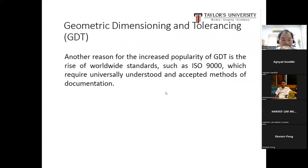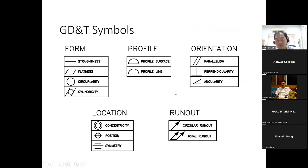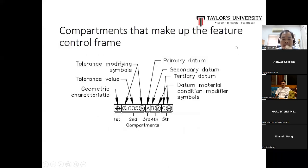Another reason for the increased probability of GD&T is the rise of a worldwide standard such as ISO 9000, which requires universally understood and accepted methods of documentation. These are the GD&T symbols: straightness, flatness, circularity, cylindricity, profile of surface, profile of line, parallelism, perpendicularity, angularity, concentricity, position, symmetry, circular runout, and total runout. There are compartments that make up the feature control frame: tolerance modifying symbol, tolerance value, geometric characteristic, primary datum, secondary datum, tertiary datum, and datum material conditions modifier symbol.